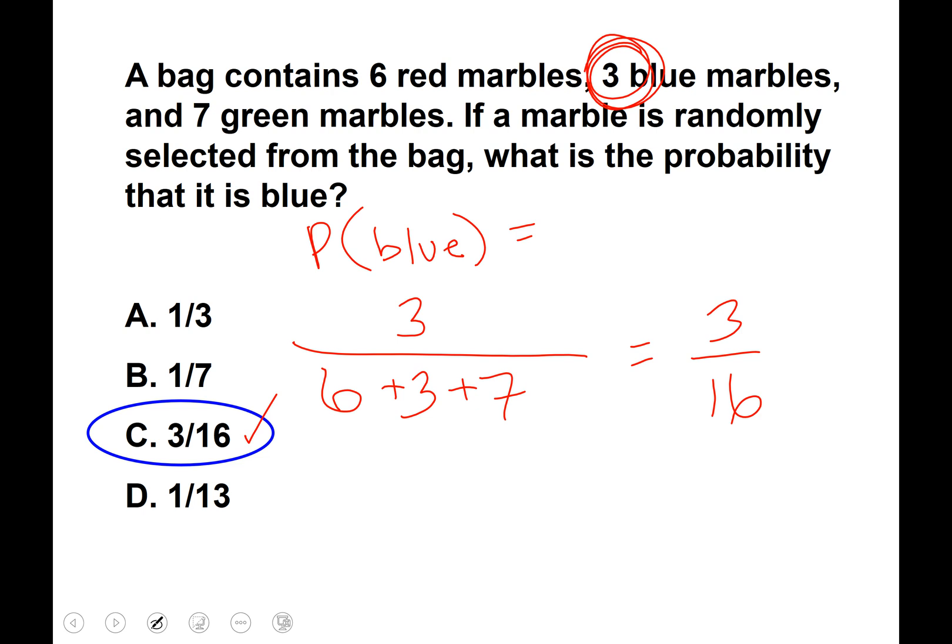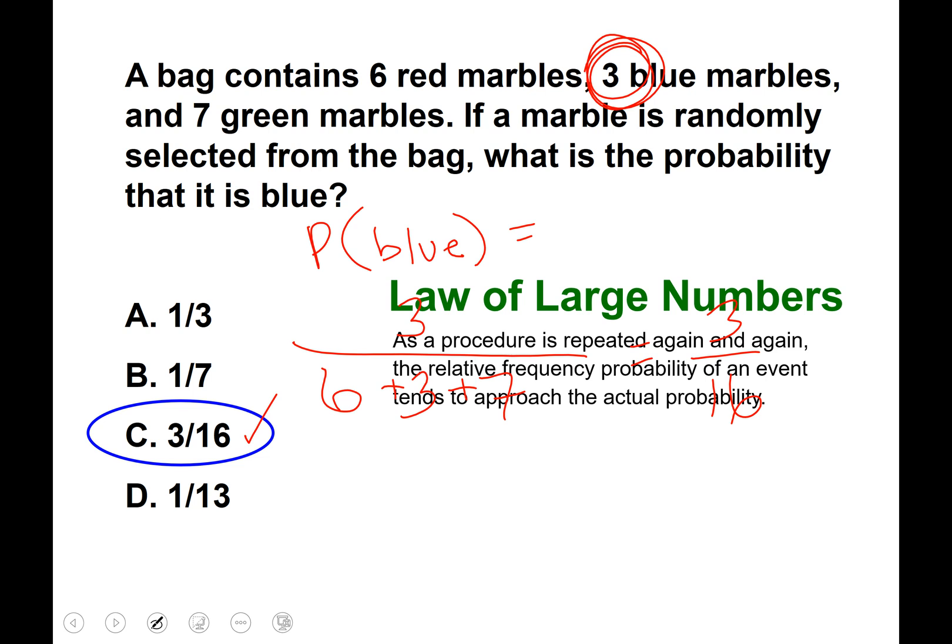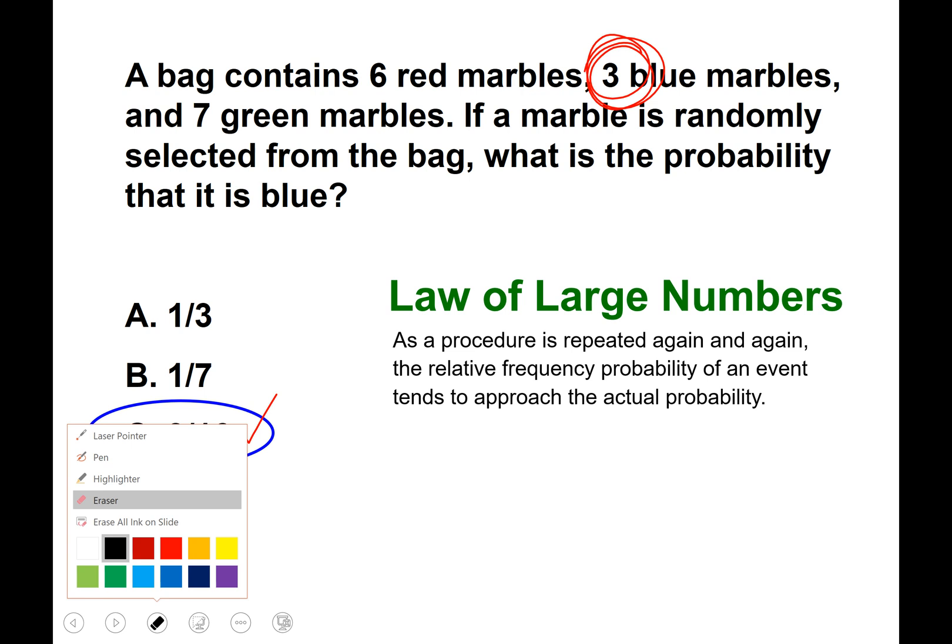Okay if you didn't get it right hopefully you see where you went wrong. I'm gonna have to erase my work there real quick so we can see this note on the law of large numbers. And that is as a procedure is repeated again and again the relative frequency probability of an event tends to approach the actual probability.